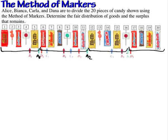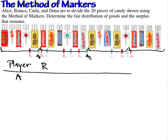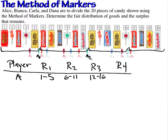We can put this into a table. The fair share for round 1 — R1 — is items 1 through 5. For round 2, player A will accept items 6 through 11. For round 3, player A will accept items 12 through 16. And for round 4, player A will accept items 17 to 20. The reason for these different groupings is that there are different flavors — maybe something a player is allergic to, something they don't like, or something they like a lot.